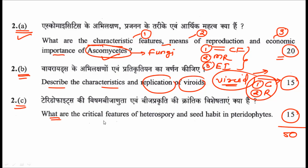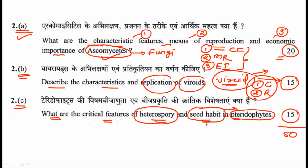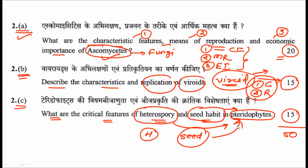The third sub-question asks about the critical features of heterospory and seed habit in pteridophytes — a very typical question for botany students, since seed habit and heterospory originated in this plant group. Answer in two phases: first describe heterospory, then the seed habit found in pteridophytes. This carries 15 marks.